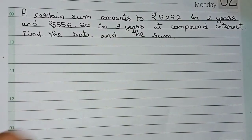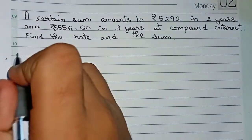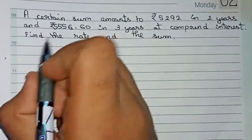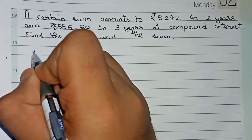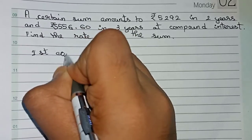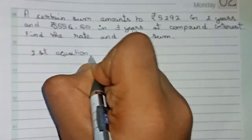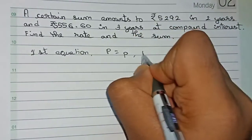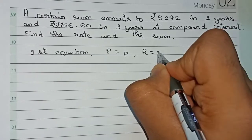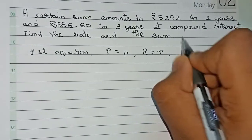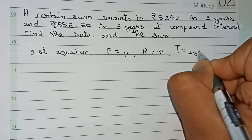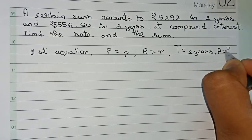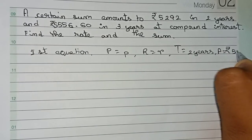So let's solve this. First, write all the information that has been given. In this question there will be two equations. For the first equation: principal is equal to P (not given), rate of interest is also not given so write rate of interest as R, time is equal to two years, and amount is given as Rs 5,292.